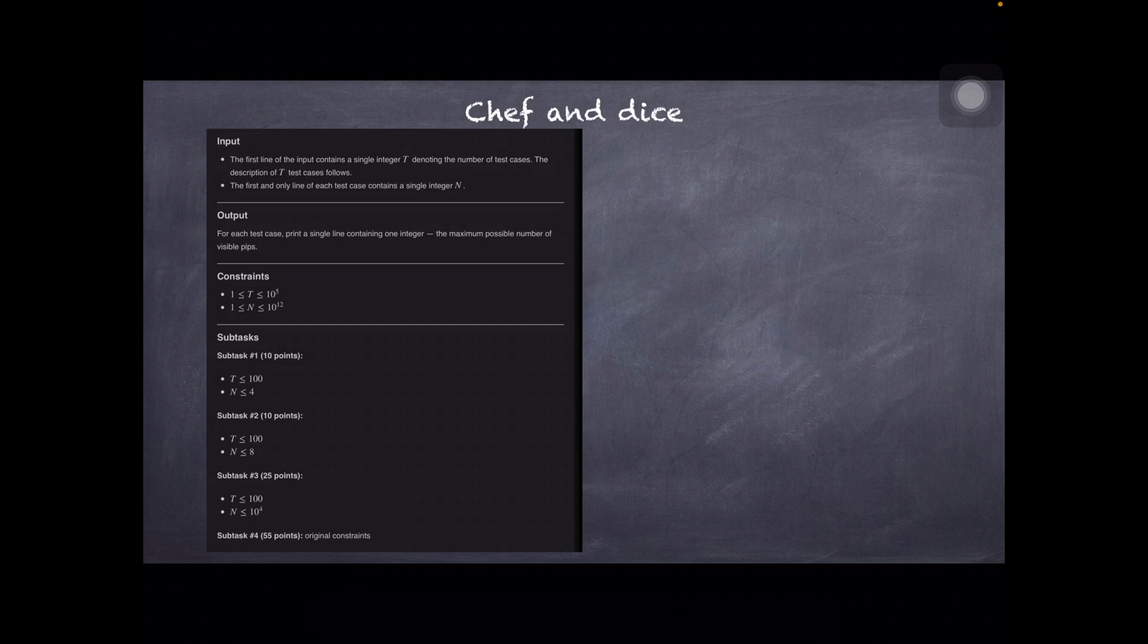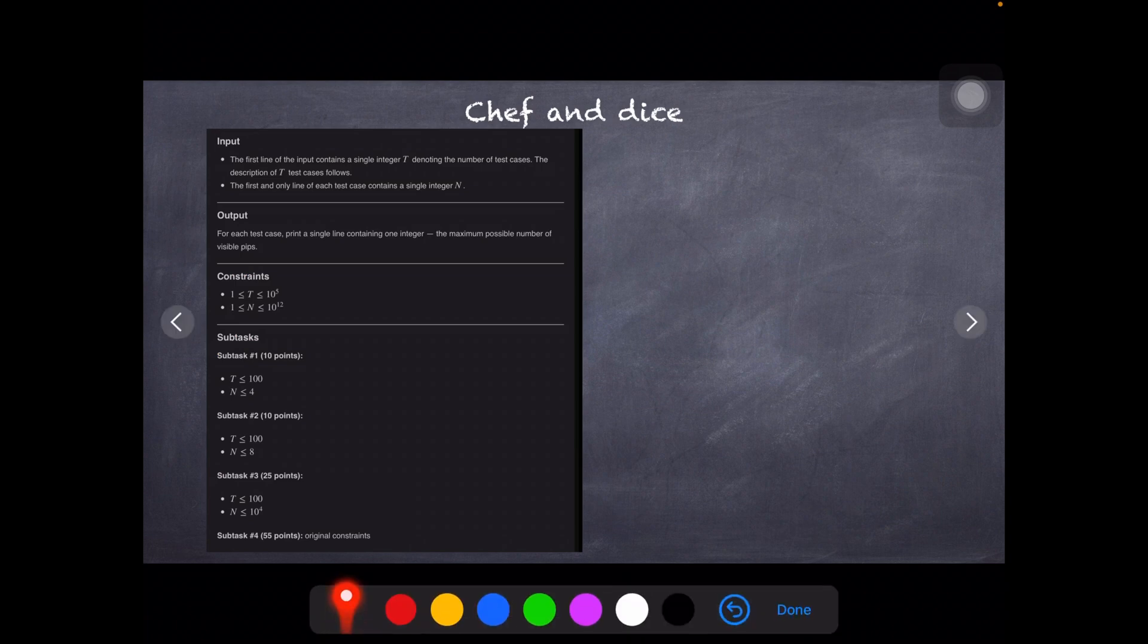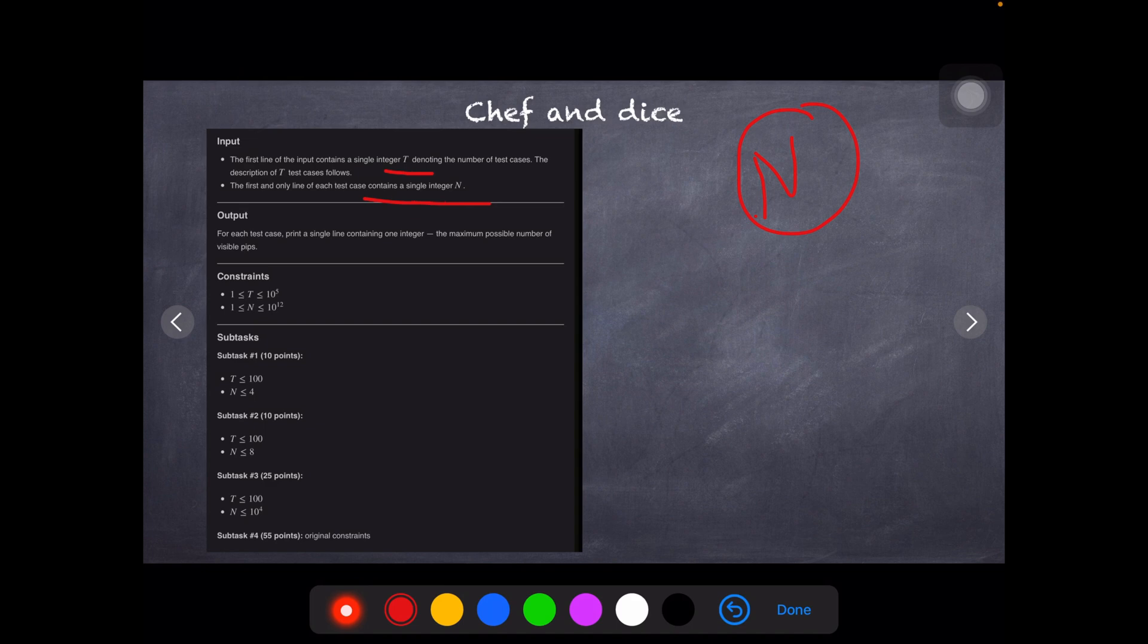Here is the input and output console definitions. The first line of the input contains T test cases, and then it follows with N, which is the number of dice that we will be given. Output: for each test case, print a single line - the maximum possible number of visible pips. We have to find the summation of the maximum total possible number of visible pips.